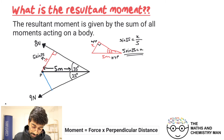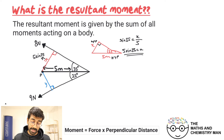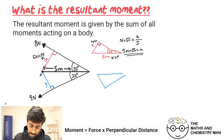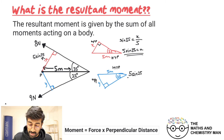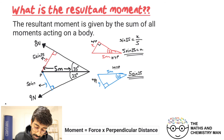Now we create a perpendicular from P, our pivot point, to the nine Newton force, making another right angle triangle. In this triangle: 25 degrees, hypotenuse five meters, right angle, and we want side y. Labeling: y is the opposite, five meters is the hypotenuse. Using sine: y equals 5 sine 25. We fill that in on the diagram as well.